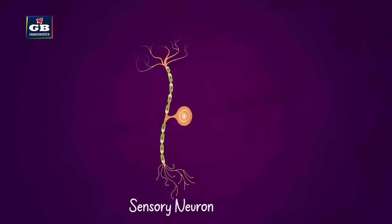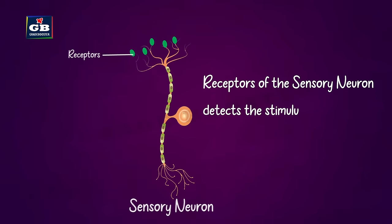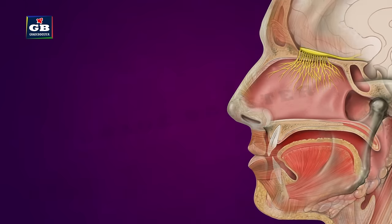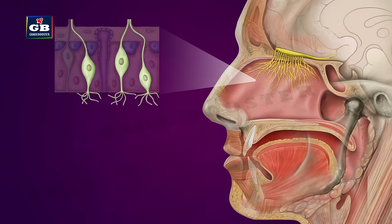The neurons present in the sense organs have specialized tips called receptors. These receptors detect the stimuli and convert them into electrical impulses.